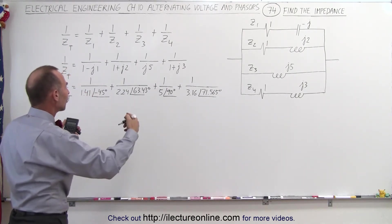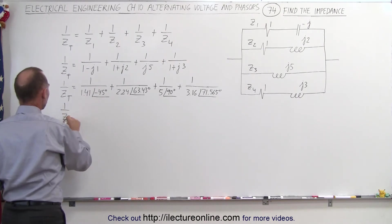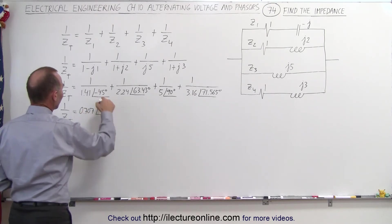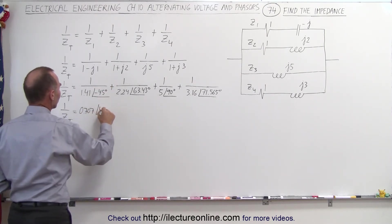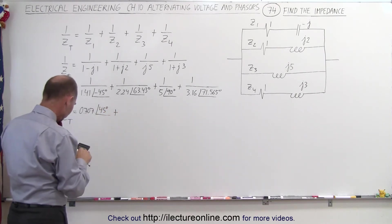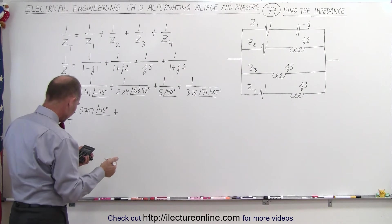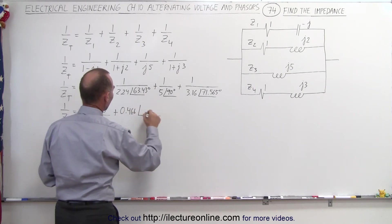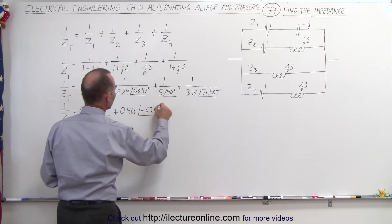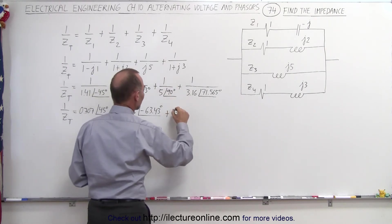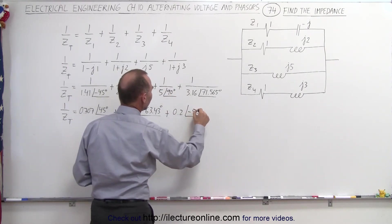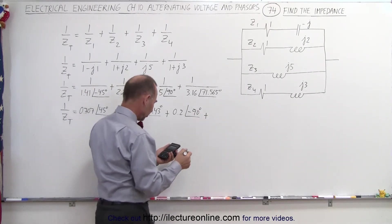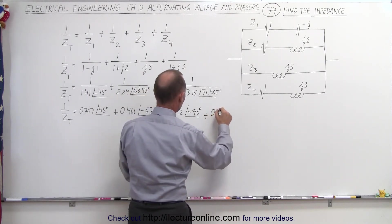Now we're ready to take the inverse of each of those. So 1 over Z total equals: 0.707 at positive 45 degrees, plus 0.446 at minus 63.43 degrees, plus 0.2 at minus 90 degrees, plus 1 divided by 3.16 which is 0.316 at minus 71.565 degrees.